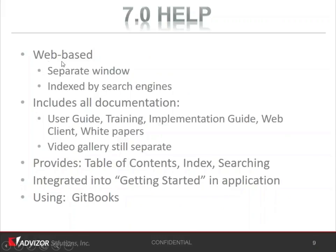The help is moving in 7.0 — it's going to be web-based, a separate window indexed by search engine. So if you want to figure out how do you change a bar chart to a spine plot, you can do it in Google. Or how do you offset a date? That will all be searchable on Google and outside of us. All documentation — user guide, training implementation guide, web client white papers — we have a video gallery of short videos that will be separate from this. We'll have a table of contents, indexed and searching. It's going to be integrated into the getting started application. So the changes to the Analyst and Analyst X to make it more clear and intuitive on the authoring side — this will be integrated into that. We're using GitBooks as a technology.